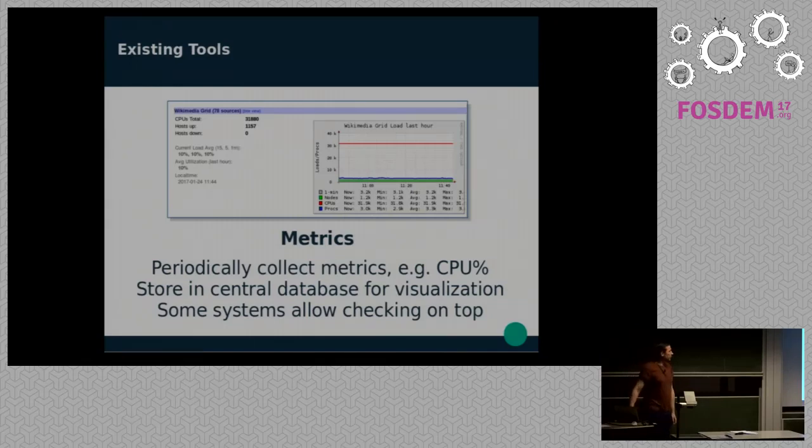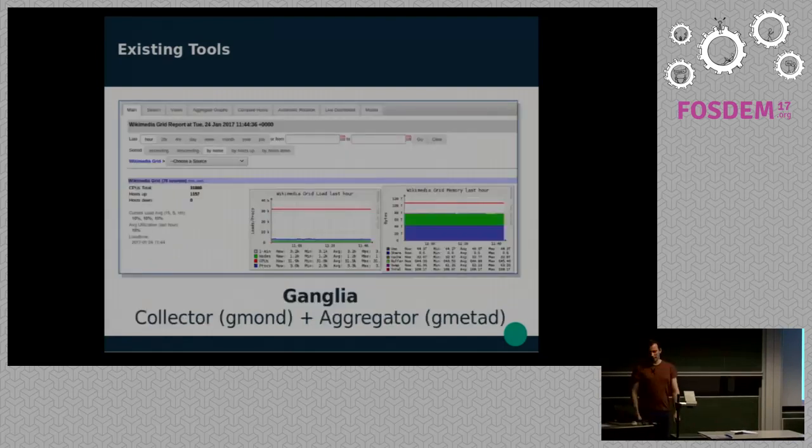So, the next kind of set of systems are these metrics based systems. So we collect metrics like CPU percentage or disk space over time. And what these let us do is these let us get some insight into what happened before your system fell over. So your system falls over. And just before it fell over, disk space was rising. That's a good sign of what might have gone wrong there. Or memory rising slowly. Things like that. So these are becoming very popular. Very, very popular as you'll see in a minute.